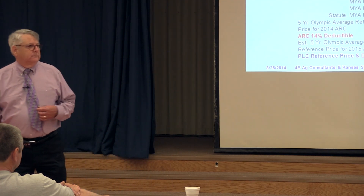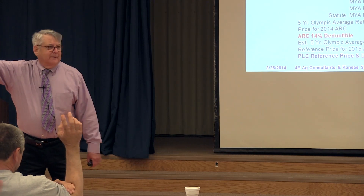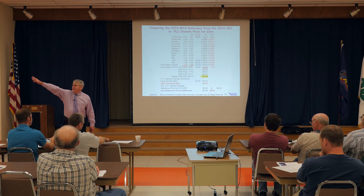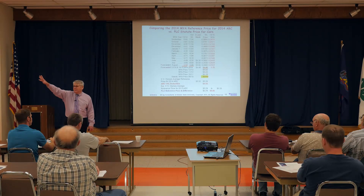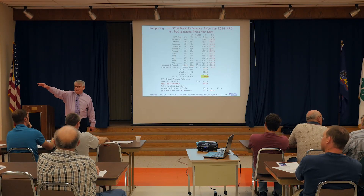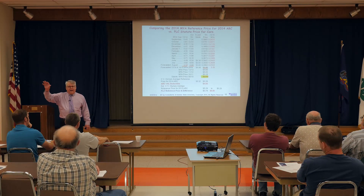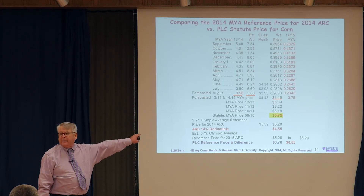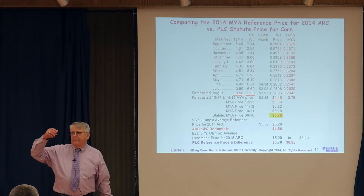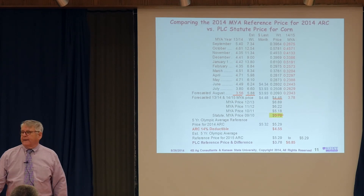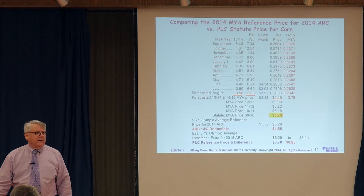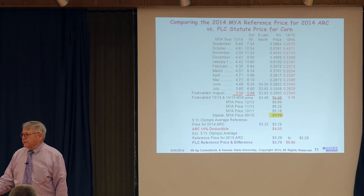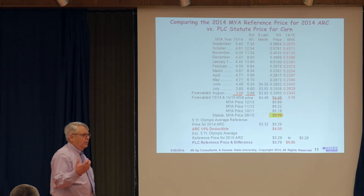Is this about risk management, or how to get the most cash out of the government? There really is no right or wrong answer here. The government program, at least in the first year, looks like the ARC program was going to give you the biggest payment. But if the bottom falls out of the market and you trade $3 corn for the next five years, PLC is going to pay a lot more money under that scenario. So if you're really risk adverse, you go to PLC.